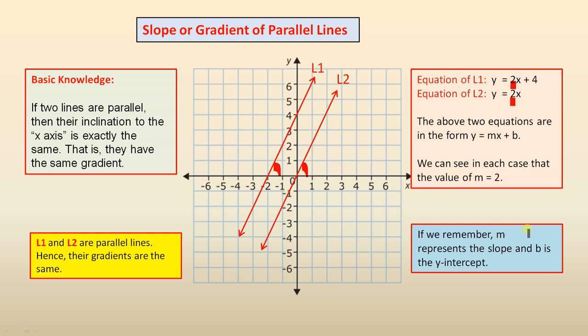If we remember, m represents the slope, and b is the y-intercept. So very quickly, if we look at L1, where the equation is y = 2x + 4, the slope of L1 is 2, because that's the m.